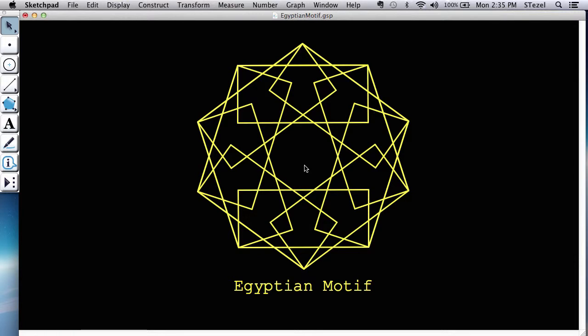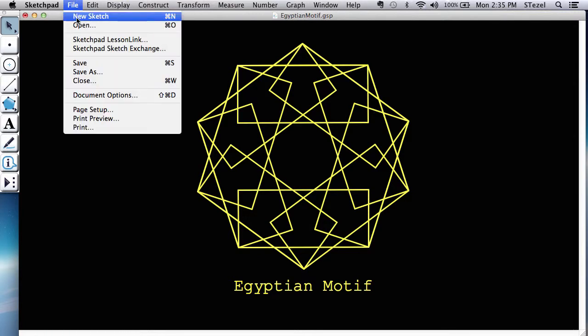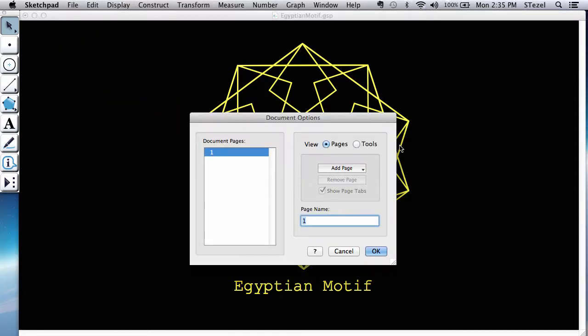The way we're going to recreate that is, so let's go to create a new sketch. You're going to need Geometry Sketch Path 5.0 or higher. I'm going to open a blank page here so it can work.